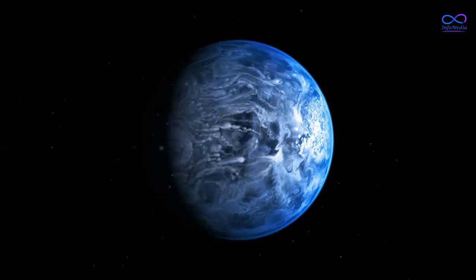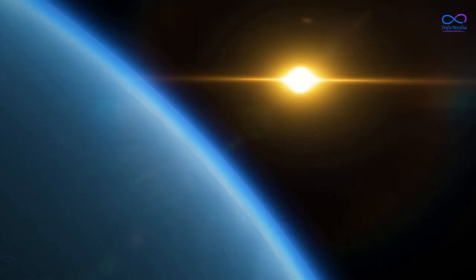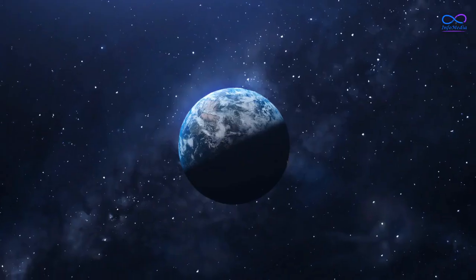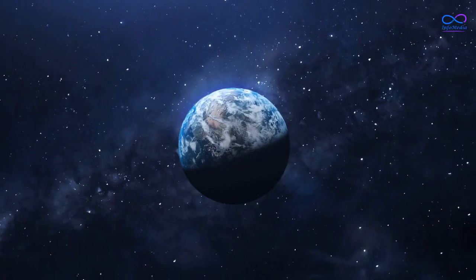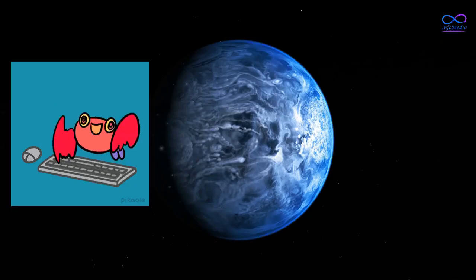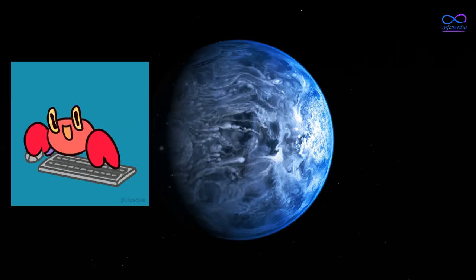Another interesting feature of HD 189733 b is its striking blue color. The planet appears blue in color because of the scattering of light by the molecules in its atmosphere. The blue color is similar to the color of Earth's atmosphere when viewed from space. Comment below if you know any more features about this planet.